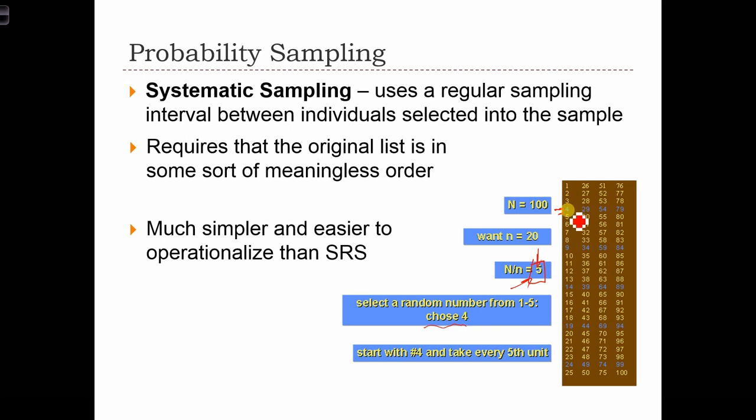So we'll enter 4, skip 5, enter 9, 14, 19, and 24. If we continue in this way up until respondent 99, we would have sampled all 20 people that we needed. This is much simpler and easier to operationalize than simple random sampling.